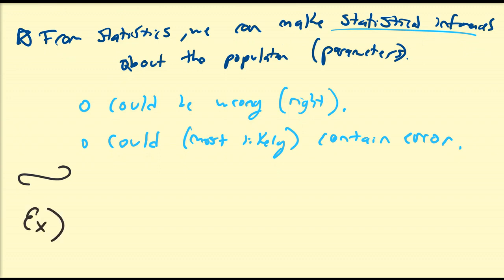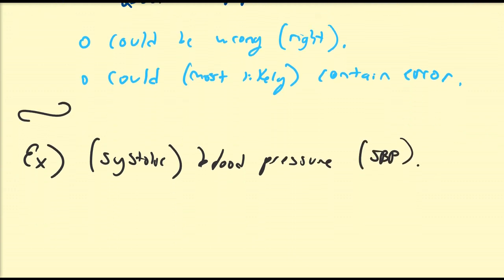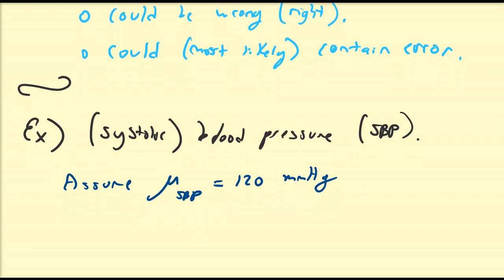For example, let's conclude all these things in one nice example. Let's talk about systolic blood pressure. What we're going to do is we're going to assume that mu SBP, so mu represents a population parameter. When I say mu SBP is equal to 120 mmHg or millimeters of mercury, I'm assuming that the average of all of the blood pressures in the entire population, whether it be country or state or county or whatnot, is 120 mmHg.